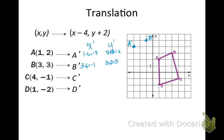If I did that to B, I would get negative 1, 5. And notice I'm plotting A prime, B prime as I go, C prime, and D prime. And then I just draw my figure. So I have translated using coordinate notation.